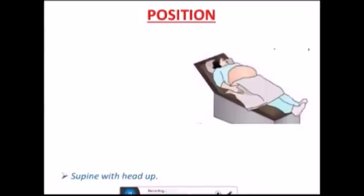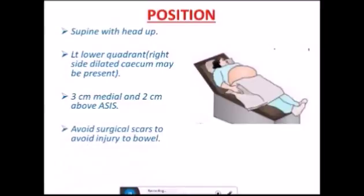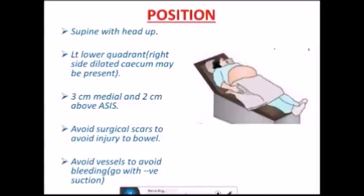The position is supine with head up. The left lower quadrant is the preferred site, as the right side may have a dilated cecum. The position is 3 cm medial and 2 cm above the anterior superior iliac spine. Avoid surgical scars to avoid injury to mobile bowel, and avoid vessels to avoid bleeding — that is why we go in with a syringe attached with negative suction.